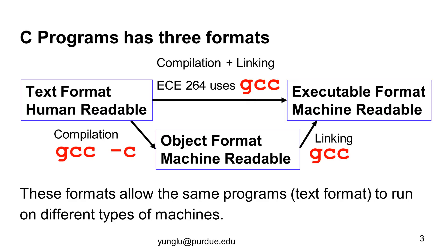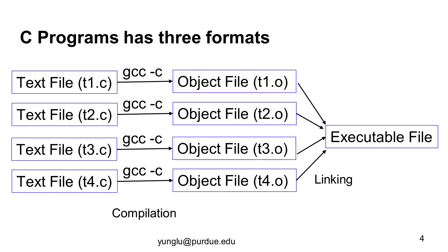Earlier, we talked about the three formats of C programs: the text format, the object format, and the executable format. The text format is readable by humans. The object and executable formats are readable by machines but not humans. A complex C program may be created using many text files. By using gcc -c, each .c file produces a corresponding .o object file. The process from a .c file to a .o file is called compilation. The object files are then put together using the linking process to create an executable file.